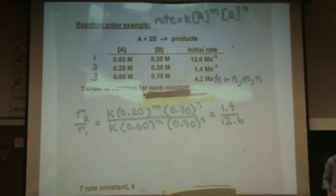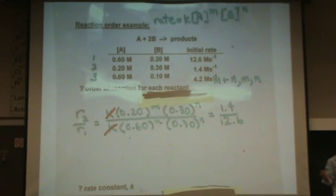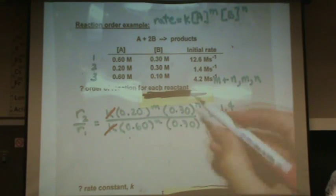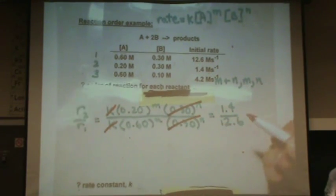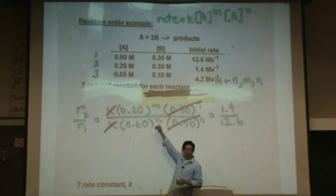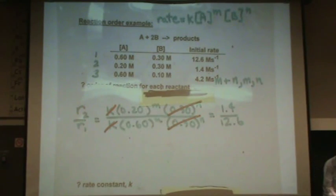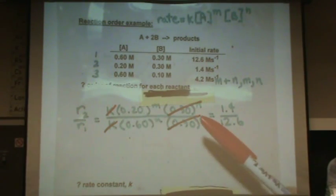Notice what happens when I do that. K's cancel because they're not going to change for a given reaction, it's a constant. The temperature is not changing, nothing's changing. Notice that the B part of the reaction cancels out. So I'm conveniently left with one variable. K is gone and n is gone. So I specifically chose a place so that the n variables would cancel, and that's one and two. Later we're going to cause the m variable to cancel.